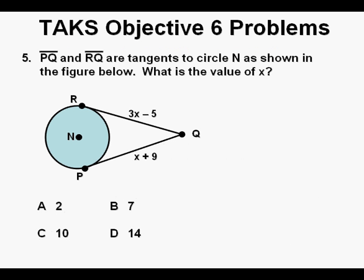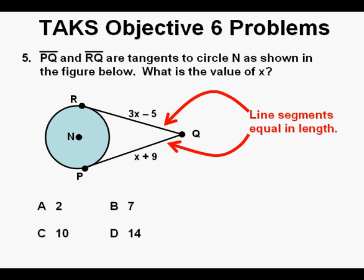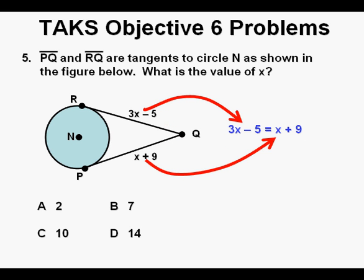Problem 5. Line segment PQ and line segment RQ are tangents to circle N as shown in the figure below. What is the value of X? Here you have a situation where the test writer has a complicated way of essentially saying that these two line segments, segment PQ and line segment RQ, are of equal length. And since these line segments are equal length, we can write an equation where one expression is equal to another expression. So 3X minus 5 equals X plus 9.